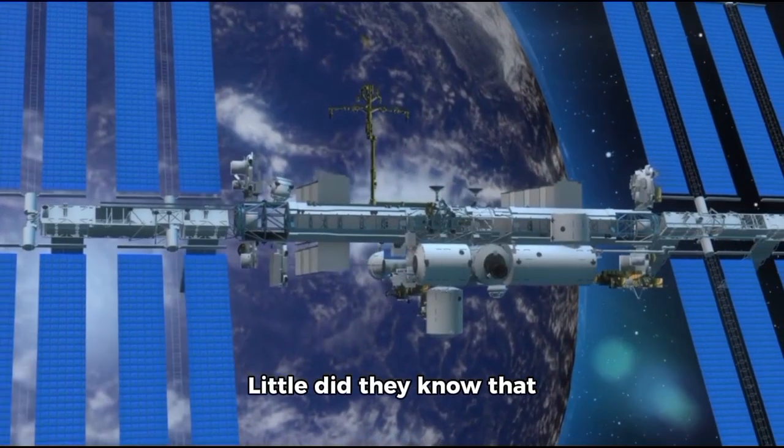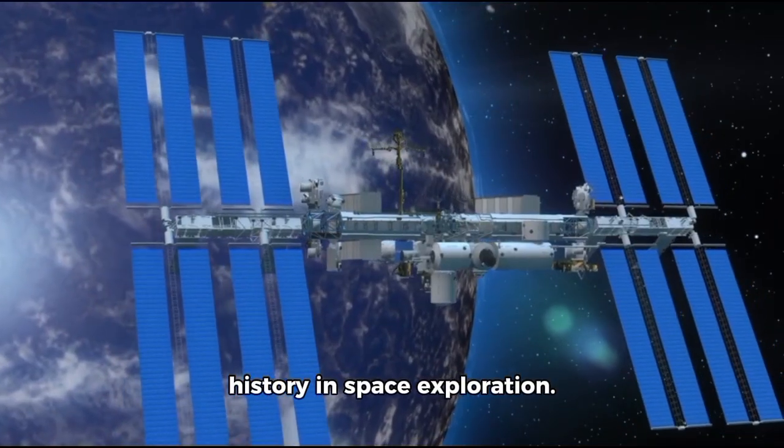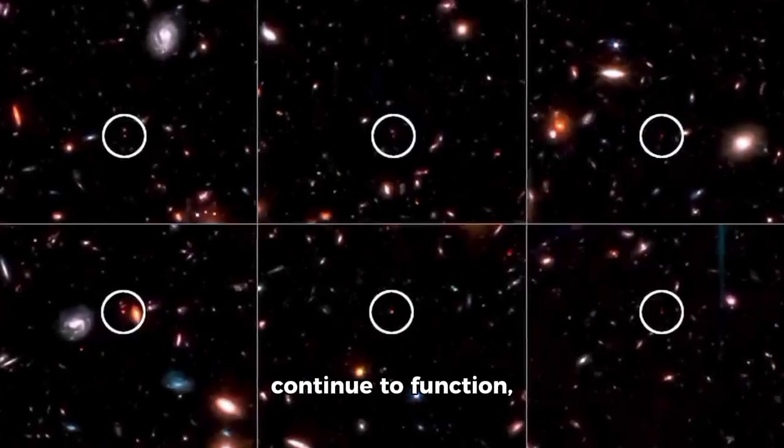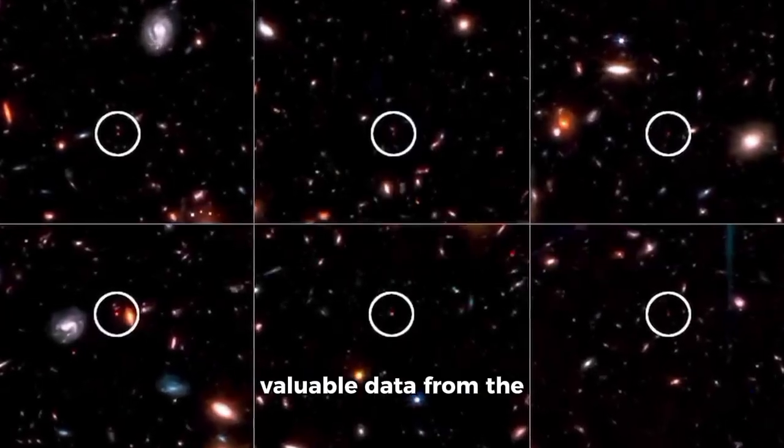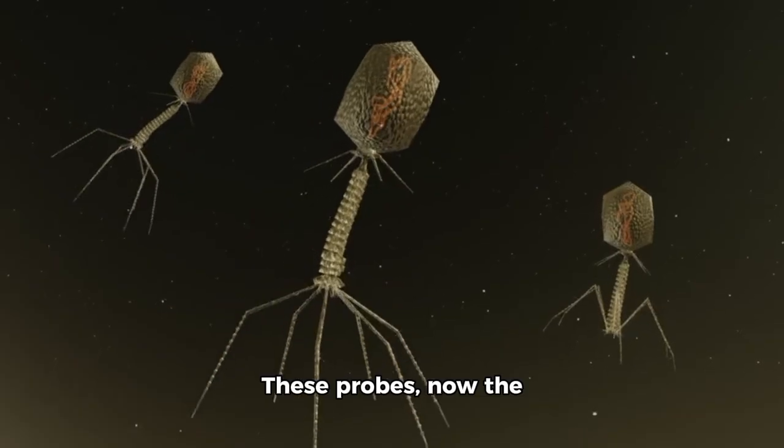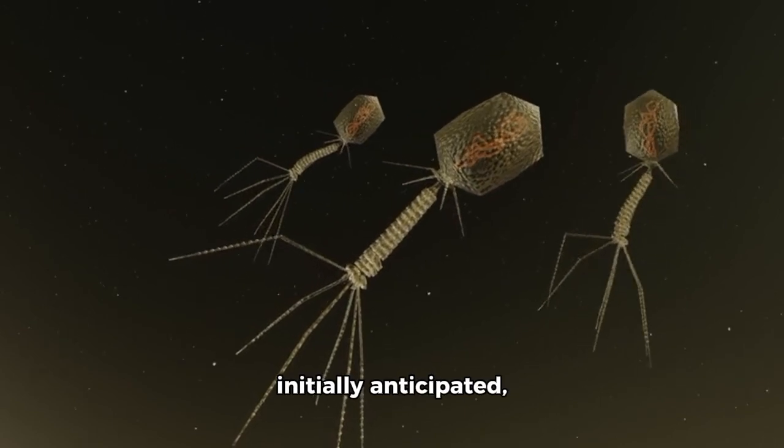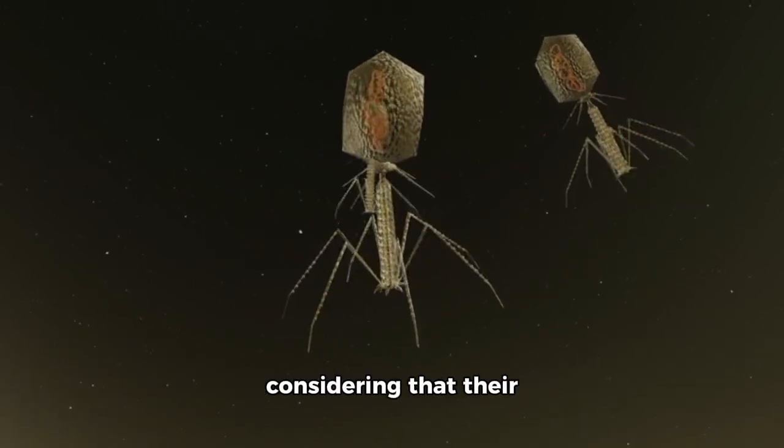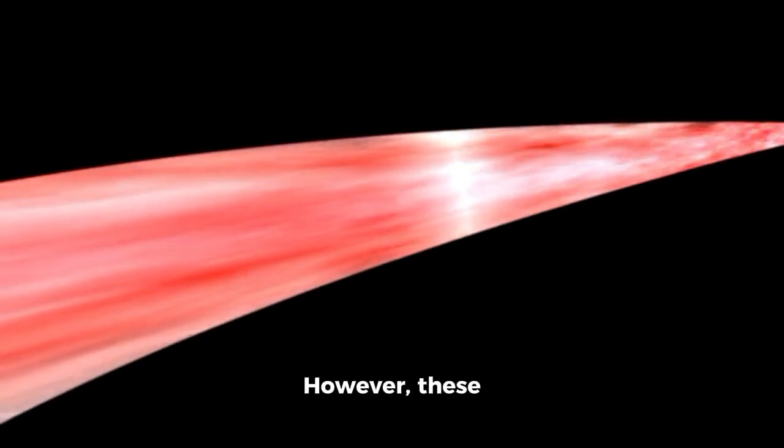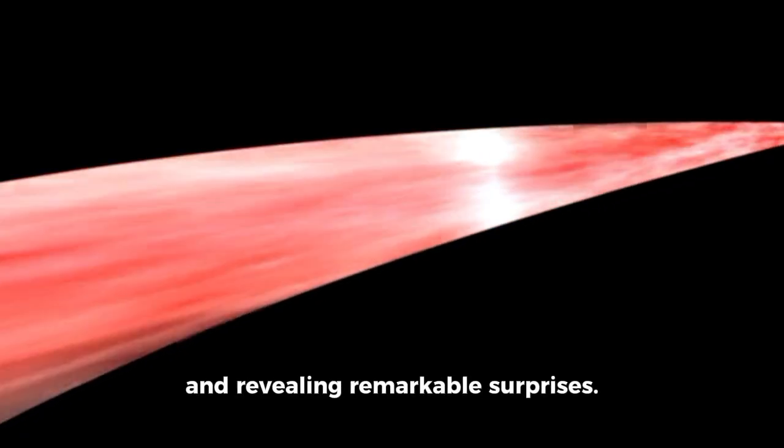Little did they know that these twin probes would shatter records and make history in space exploration. More than 45 years after their launches, Voyager 1 and Voyager 2 continue to function, daily transmitting valuable data from the furthest reaches of our solar system. These probes, now the most distant man-made objects, have traveled far beyond what was initially anticipated, which is impressive when considering that their mission was initially only planned for four years. However, these interstellar trailblazers were just beginning their journey and revealing remarkable surprises.